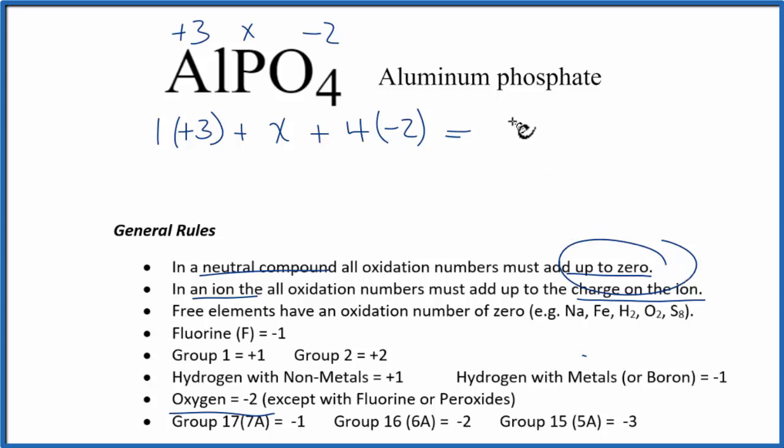And again, that all adds up to zero. So now we just figure it out. 3 plus X plus that negative 8 equals 0. So if we solve for X, that'll equal 5. It'll be positive 5. So the oxidation number on the phosphorus in this AlPO4 should be plus 5.